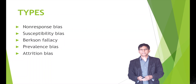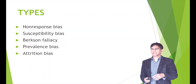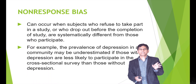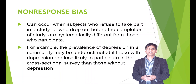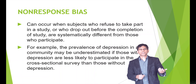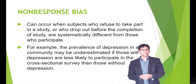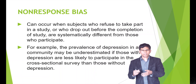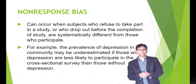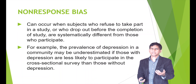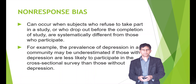Let's look at the first one — non-response bias. It can occur when subjects refuse to take part in a study, if they drop out, or if you do a survey and they don't respond. For example, if you get more than about 70 percent response back on a survey, that's considered a good survey. Anything less can introduce non-response bias.